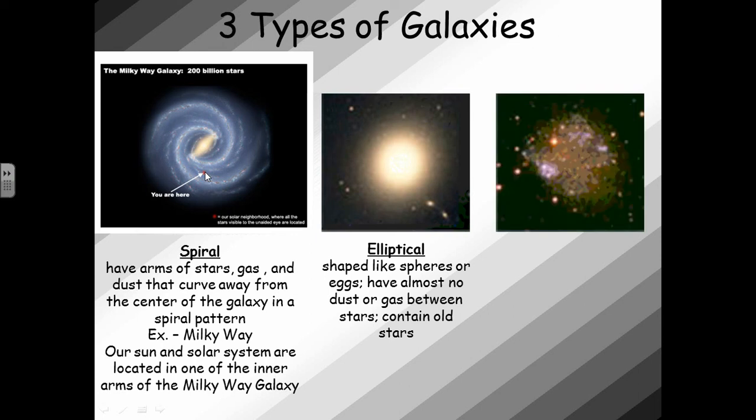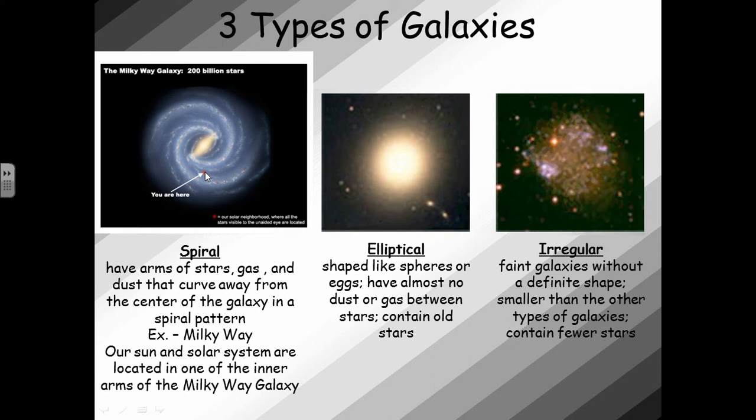The third type of galaxy is an irregular galaxy, which has faint galaxies without a definite shape. These are often smaller than the other types of galaxies, and they contain fewer stars.